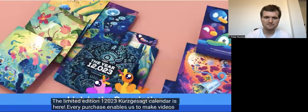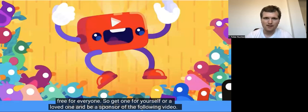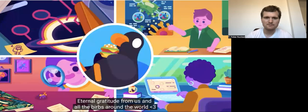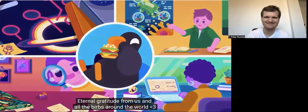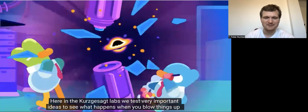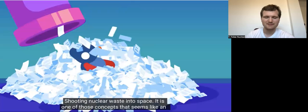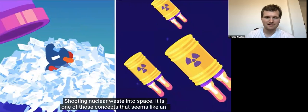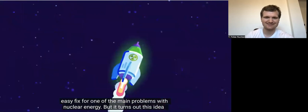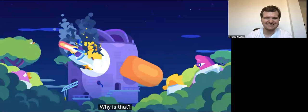The limited edition 12,023 Kurzgesagt calendar is here. Every purchase enables us to make videos free for everyone. So get one for yourself or a loved one and be a sponsor of the following video. Eternal gratitude from us and all the burbs around the world. Here in the Kurzgesagt labs, we test very important ideas to see what happens when you blow things up or play with black holes. Many of you suggested that we look into an idea that sounds reasonable: shooting nuclear waste into space. It's one of those concepts that seems like an easy fix for one of the main problems with nuclear energy. But it turns out there's that green glow again, but horribly bad. And it gets worse the longer you think about it. Why is that?